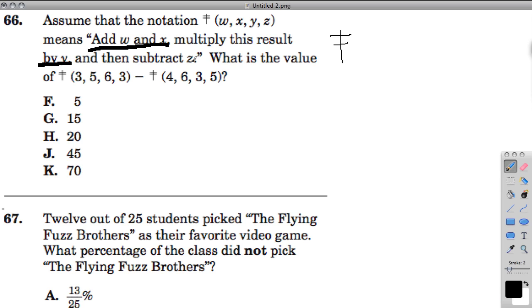and then subtract z. Here they show you that the order of the numbers given, w, x, y, z, will be the order in which the numbers appear. So here 3 is w, x is 5, 6 is y, 3 is z, and then the same thing here. They want to know what's the value of this sign for these numbers minus this sign for these numbers.